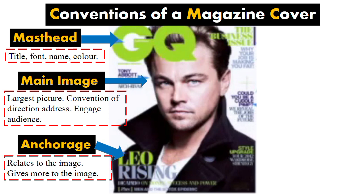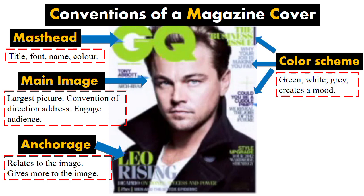A convention of a magazine front cover is that they have a color scheme — often three or four colors that the front cover uses. On this cover it's simple: you've got green, white in the background, gray, and also purple. So that's the color scheme they've gone for.